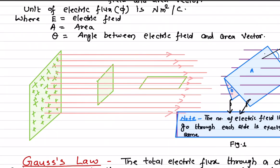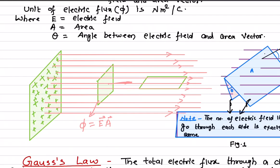How many electric field lines pass through this area? The total flux through this area is electric field times the area. In this case, the electric field and the area vector are in the same direction, so cosine theta equals 1 because theta is equal to 0 degrees.